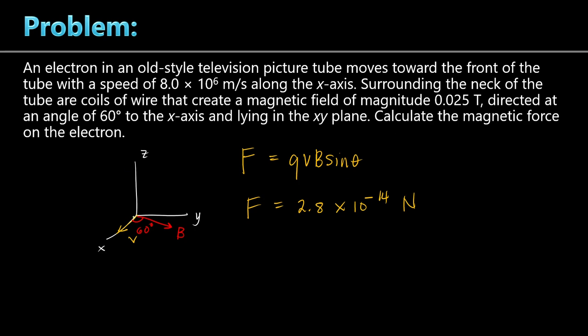To find the direction of the force: use your right hand. Curl your four fingers from the velocity vector toward the magnetic field. Where does the thumb point? Upward. So the direction of the force is upward. But wait — is that correct?